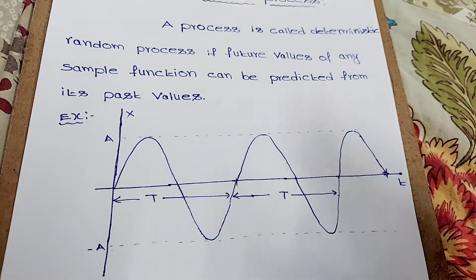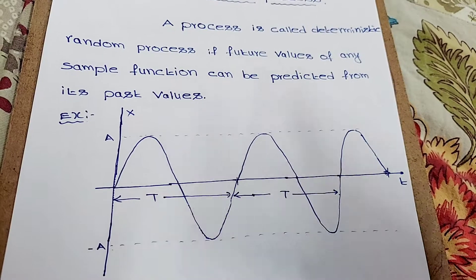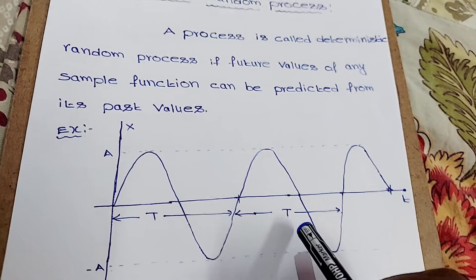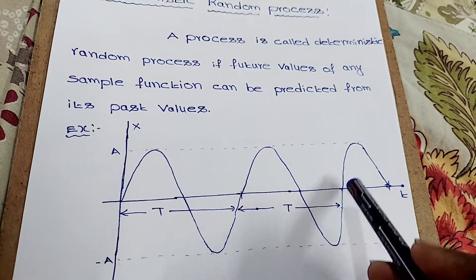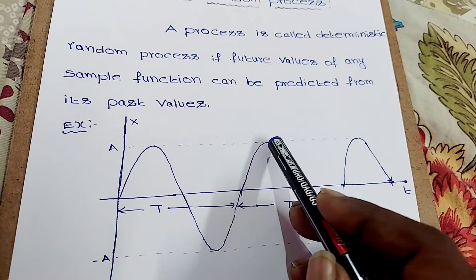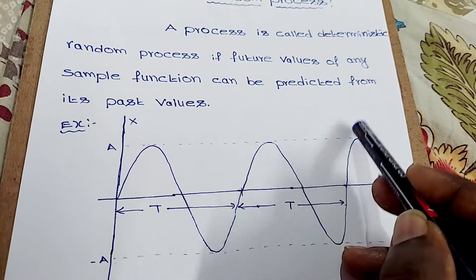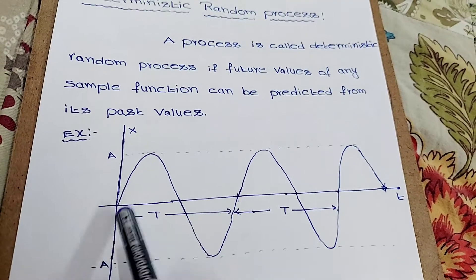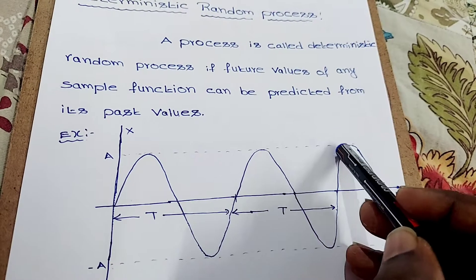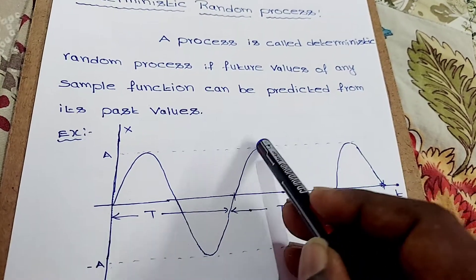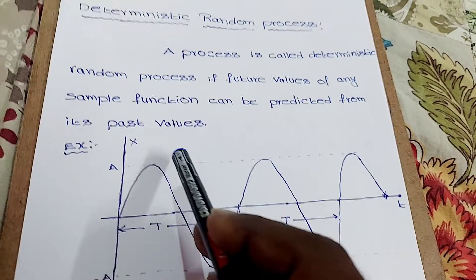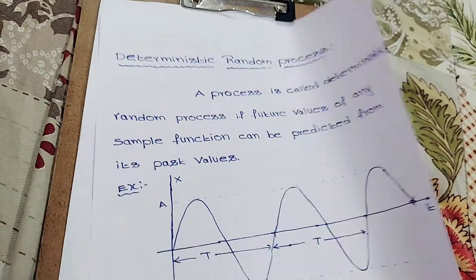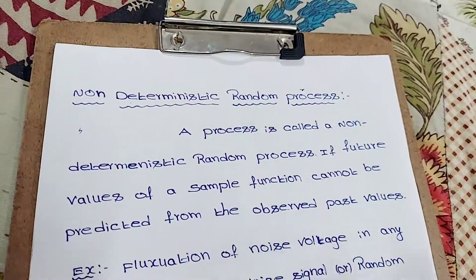Future values can be predicted by knowing past values — that is the deterministic random process. In this example figure, if you observe from any point, you can predict future values by observing past values, because amplitude and time period are both constant.